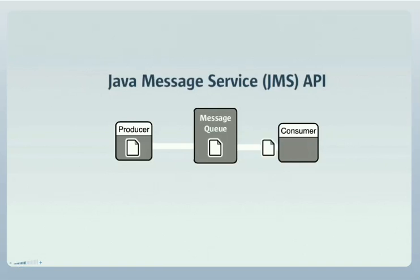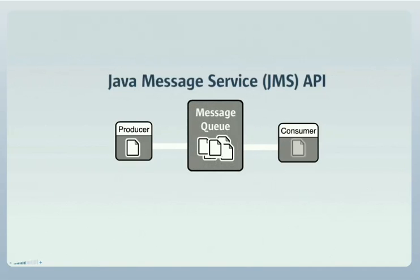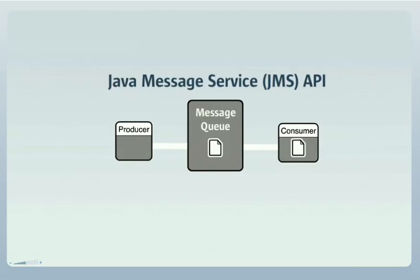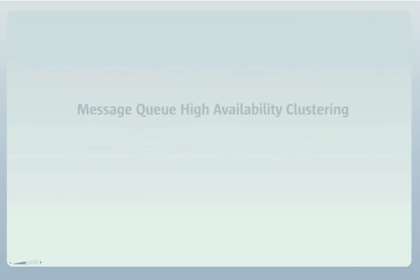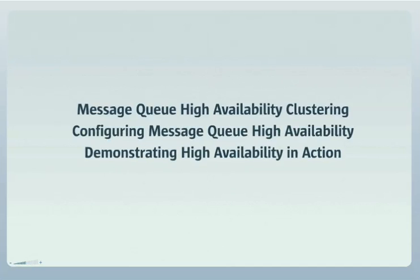Critical to the use of Message Queue in a production system is its ability to scale to meet increasing loads and to continue operating even when failure occurs. This presentation will demonstrate the clustering technologies used by Message Queue to provide a scalable, high-availability messaging service. We'll see how Message Queue high-availability clusters work and how to configure them, and we'll see a demonstration of high-availability in action.